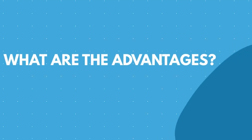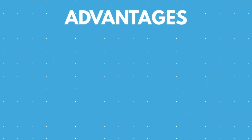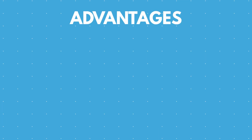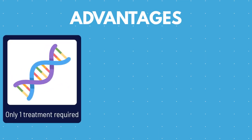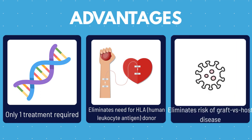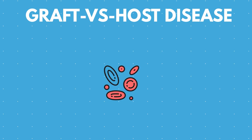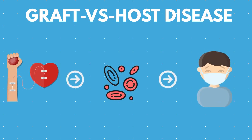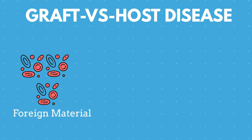So what are the advantages of using CRISPR for treating sickle cell disease? Using CRISPR allows the patient to be treated in one treatment rather than using a lifetime of transfusions and medications. Another advantage is that it eliminates the need to find a human leukocyte antigen donor for a blood or bone marrow transfusion. Finally, it eliminates the risk of graft-versus-host disease, which occurs when bone marrow or stem cells are transplanted into a recipient from the donor, the recipient's body classifies the cells as foreign material, leading to an allergic reaction in which the cells start attacking the human body.